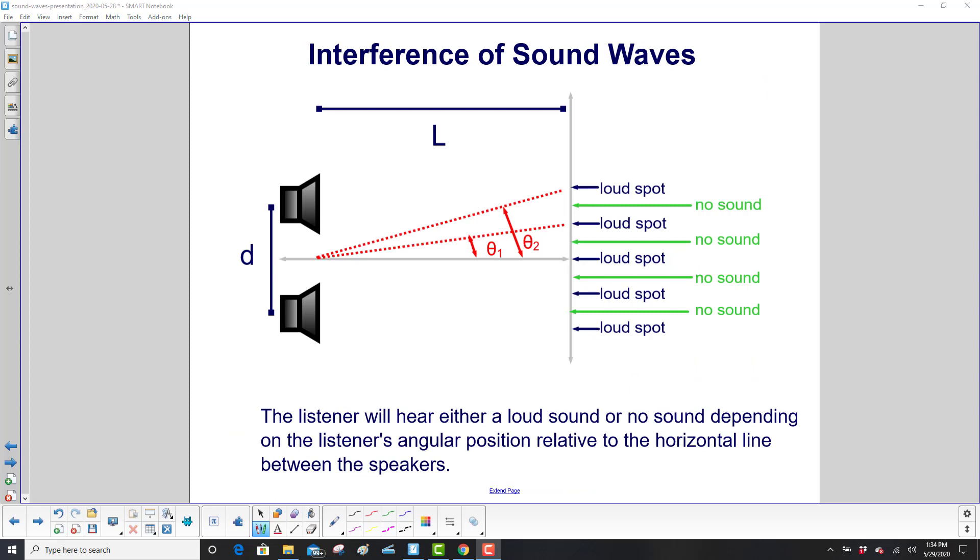The listener will then hear either a loud sound, that's where you have the maxima, or no sound at all, depending on the listener's angular position, theta one, theta two, relative to the horizontal line between the speakers. So if the listener's right here in the middle, here's a loud spot. He can hear it very nicely.